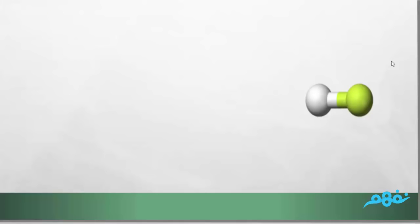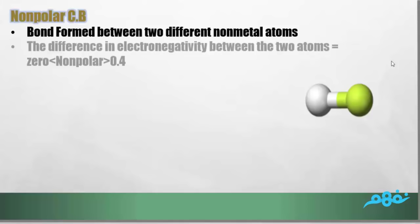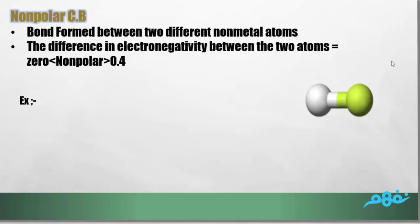The non-polar covalent bond is the bond formed between two different non-metals atoms. Unlike pure covalent bonds, which involve similar atoms, non-polar bonds involve different atoms because they have different electronegativities. The difference in their electronegativities is more than zero and less than 0.4.